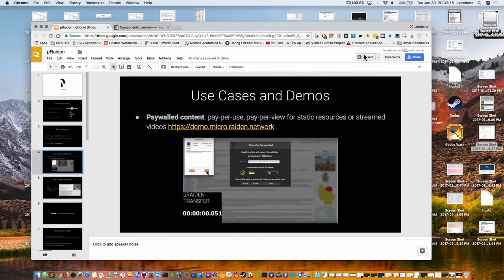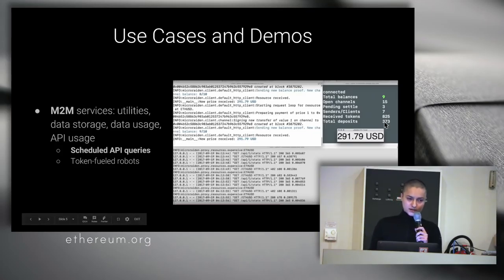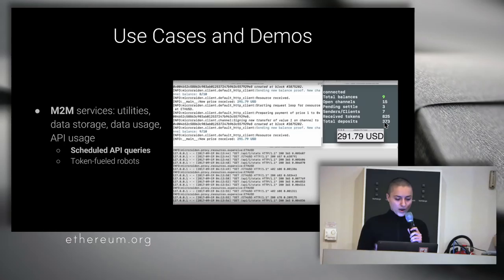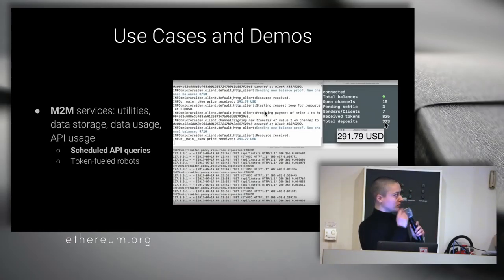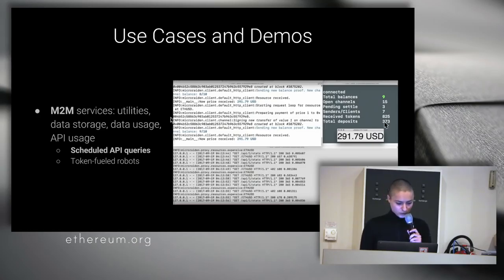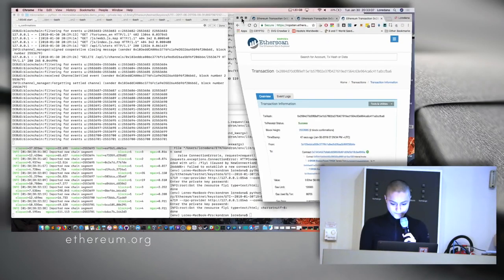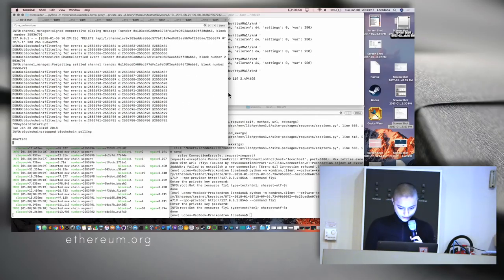Going back to the presentation: one use case is paywall content and another is machine-to-machine services — APIs for whatever you would think. For example, we have a video demo online showing an example of querying the ether price in US dollars. We do this constantly, and we can see that we're sending payments — sending a new balance proof is the actual payment.